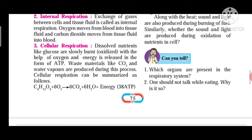Energy is released in the form of ATP. Along with that, waste materials are also produced during the process of cellular respiration, like carbon dioxide and water vapors. Dissolved nutrients like glucose are slowly burnt with the help of oxygen and energy is released, and waste materials like carbon dioxide and water vapors are produced. Cellular respiration can be summarized as: C6H12O6 (glucose) + 6O2 (oxygen) gives 6CO2 (carbon dioxide) + 6H2O (water) + energy.